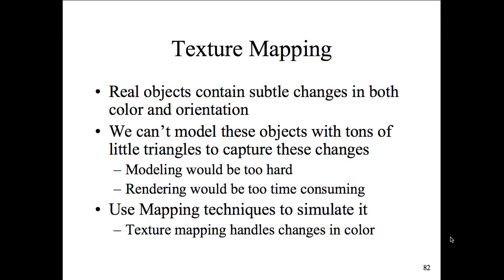Texture mapping is very popular and supported in almost all graphics applications. You take a wireframe and instead of putting an artificial color, shade, or light on it, you put a graphics file — a picture. Texture mapping adds realism: you can put an actual person's face on a 3D model of a robot or human. Real objects contain subtle changes in color and orientation that can't be achieved with color and lighting models alone, and modeling these changes with tiny triangles would be too hard and too time-consuming to render. So we use texture mapping to simulate these effects.